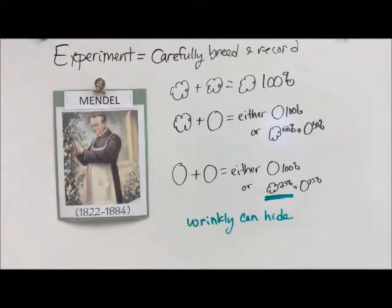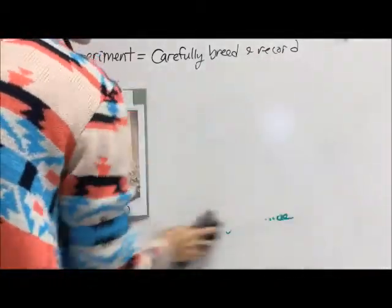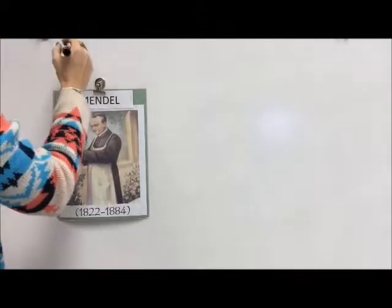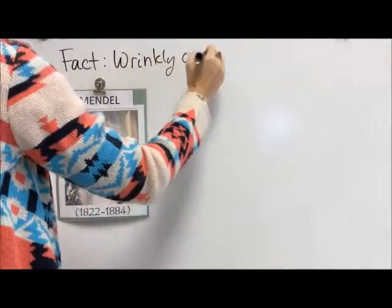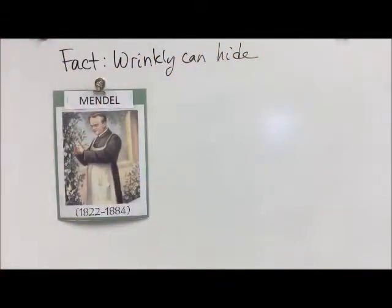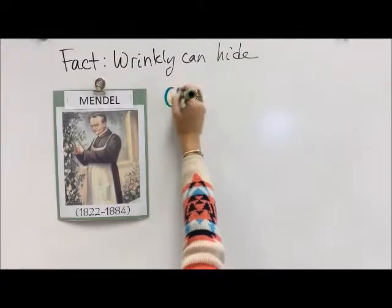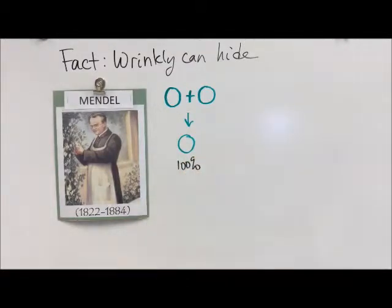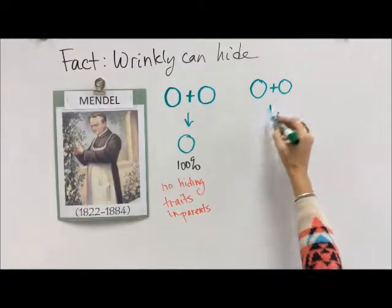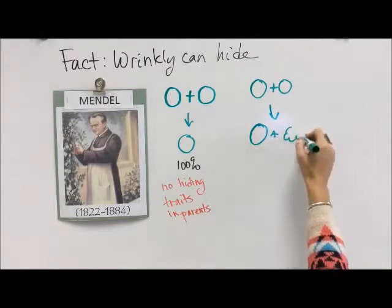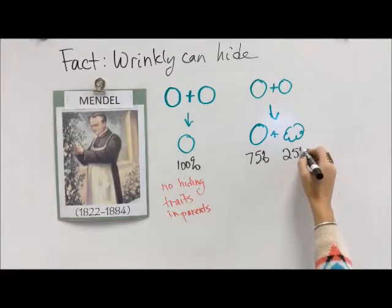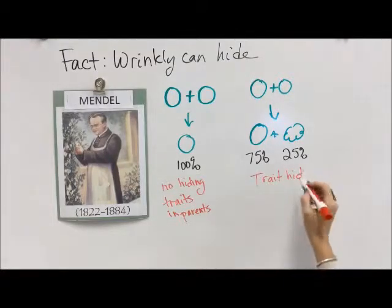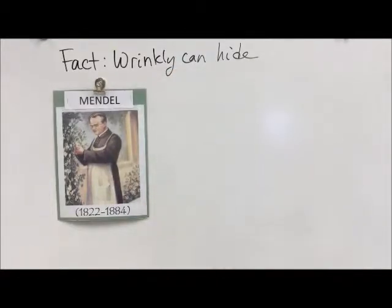He started noticing these mathematical patterns and also noticed that wrinkly can hide. He took this evidence and showed it to other scientists. As we've discussed, something becomes a fact if it can be repeated time and time again. Looking at family lineage: smooth plus smooth can equal smooth 100% of the time, meaning nothing is hiding in the parents, so offspring are 100% smooth. Or it can give us smooth 75% of the time and wrinkly 25% of the time — meaning there is a trait that is hidden.